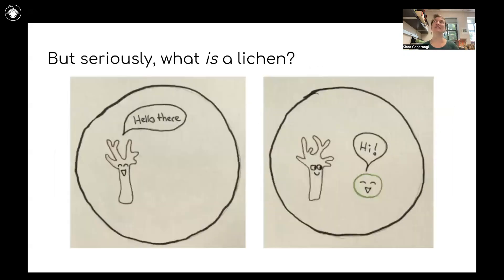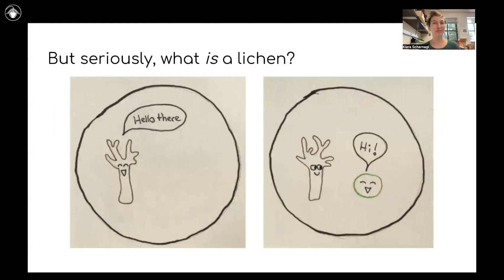So seriously, what is a lichen? The classic definition of a lichen is a symbiotic association between a filamentous fungal partner and a photosynthetic partner. This is usually green algae, but it can sometimes be cyanobacteria instead. Or, lichens being lichens, it can be green algae and cyanobacteria. This is the classic definition — this partnership between two totally different species coming together to form what we recognize as a lichen.